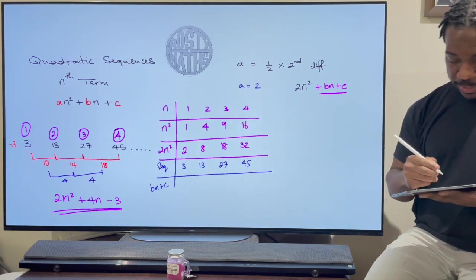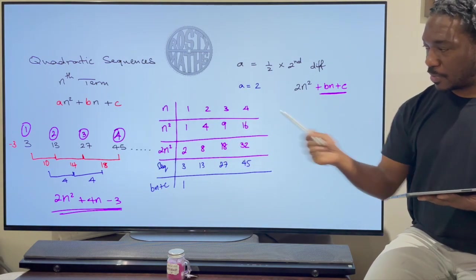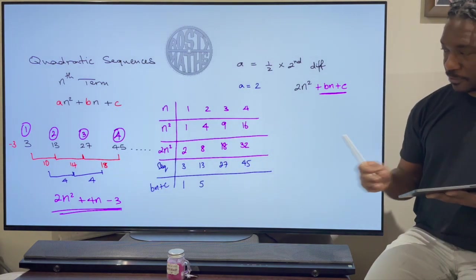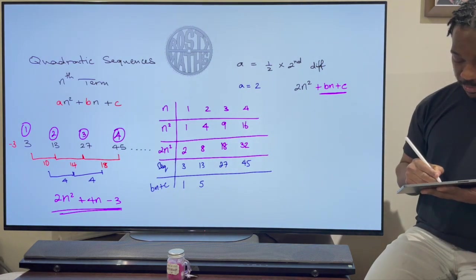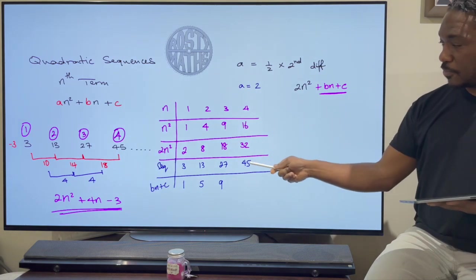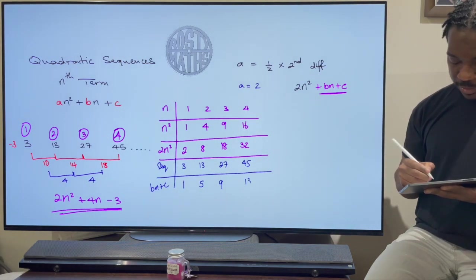So 3 take away 2 that's 1. 13 take away 8 that's 5. 27 take away 18 that's going to be 9. And 45 take away 32. That's going to be 13.